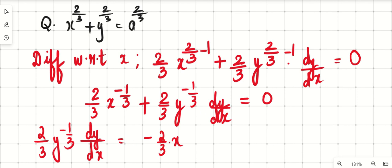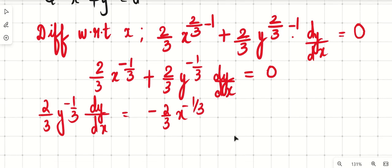This I am taking to the right hand side. So minus 2 by 3 x raised to minus 1 by 3. From here dy by dx is minus 2 by 3 x raised to minus 1 by 3 into, see here when it comes here it will become division.